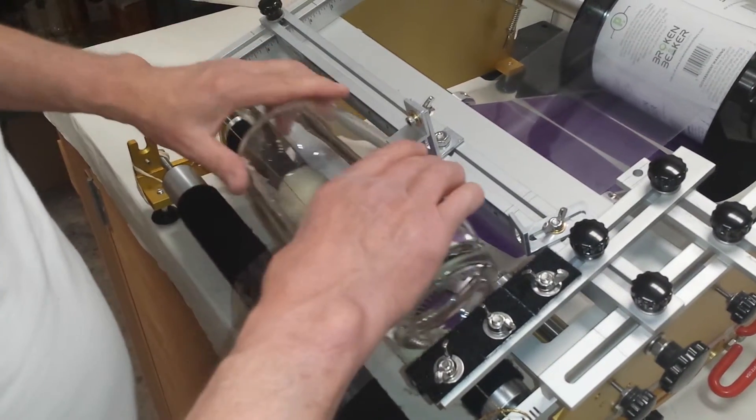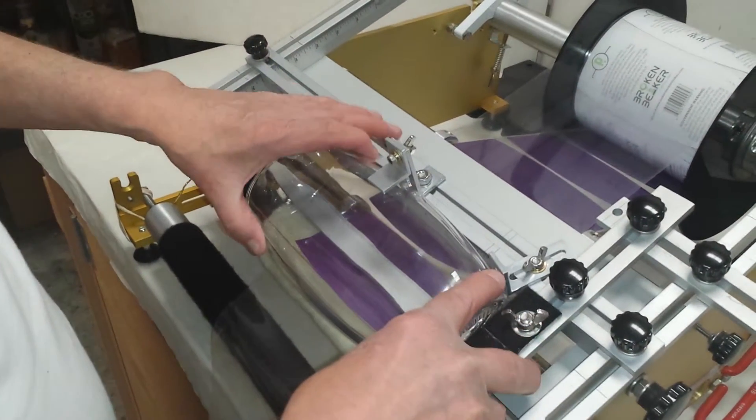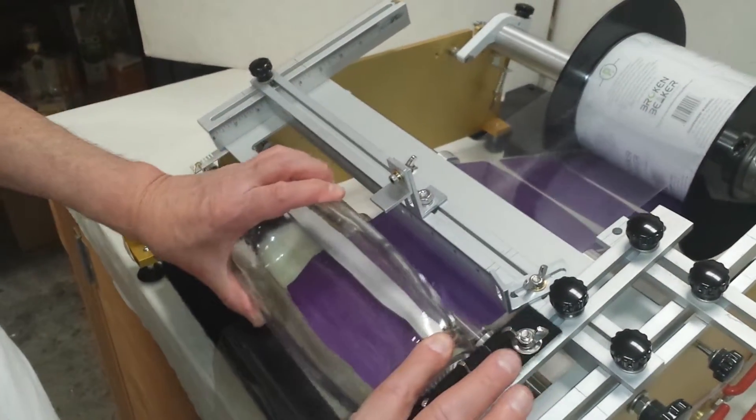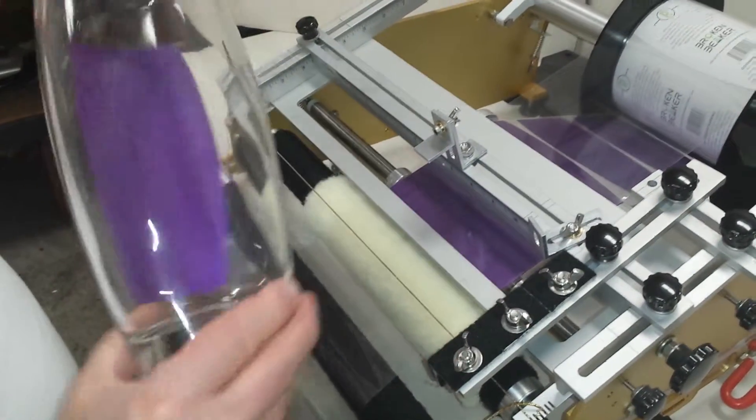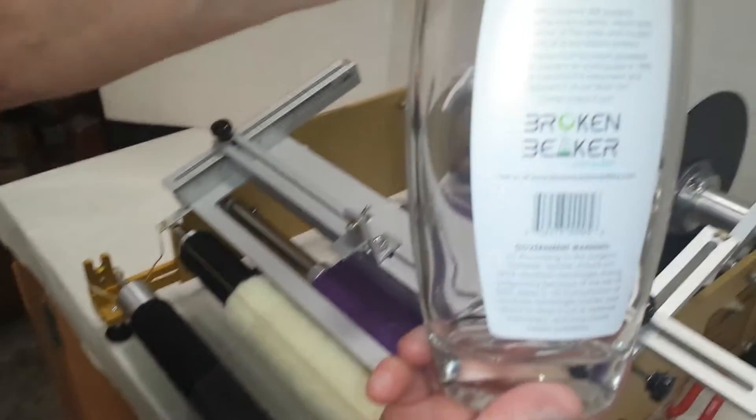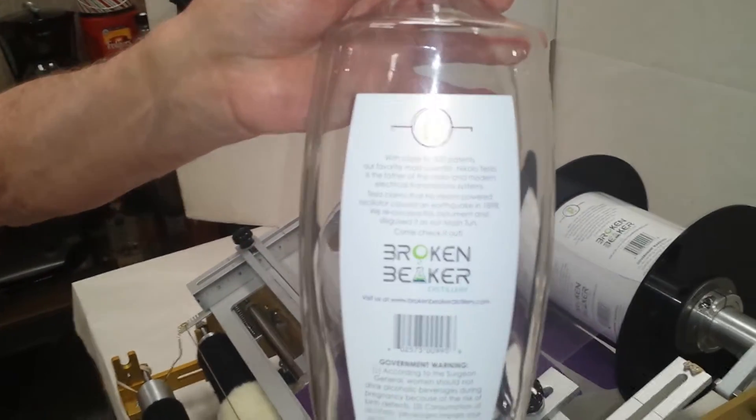So we pull the label out to the indicator line and we put it in the nesting area which is custom designed for this. And you can take a close-up here - you can see there's absolutely no bubbles in that. I'm gonna apply another one to the back side.